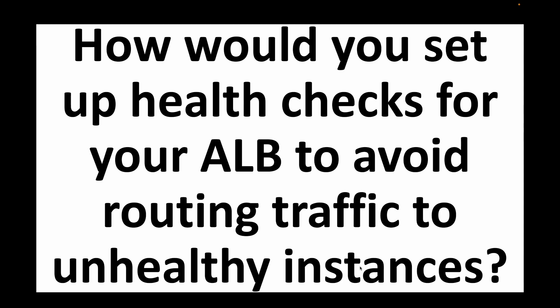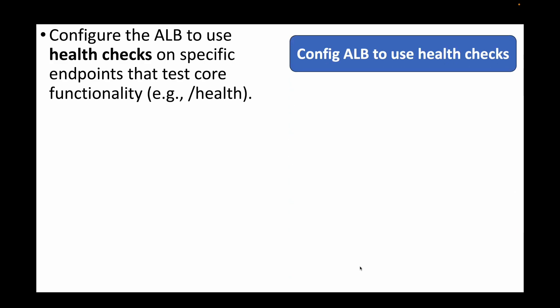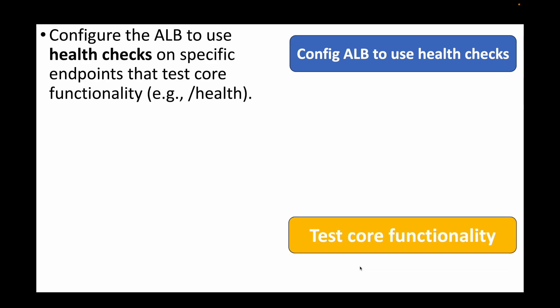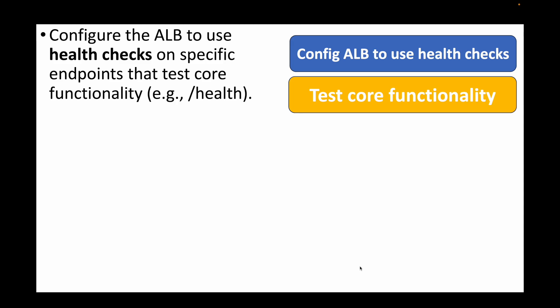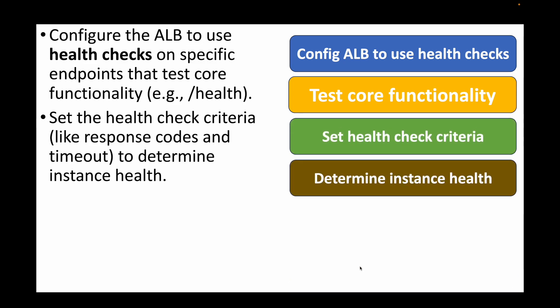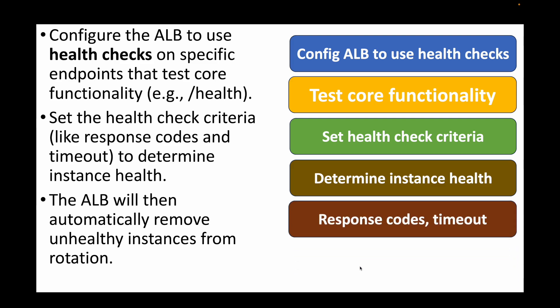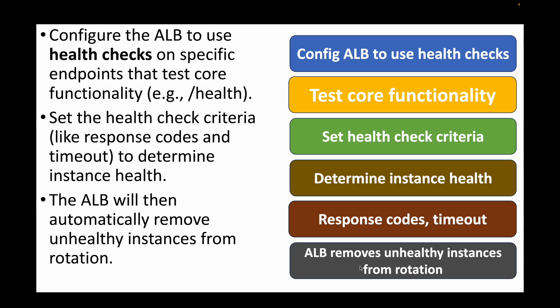The next question: how would you set up health checks for your ALB to avoid routing traffic to unhealthy instances? Your ALB uses target groups which use health checks to evaluate whether traffic can be routed to instances. In the ALB configuration, we define a health check endpoint — for example, slash health — and if a success response is received the instance is marked healthy; otherwise it's marked unhealthy. ALB automatically removes unhealthy instances from rotation and only sends traffic to healthy EC2 instances.